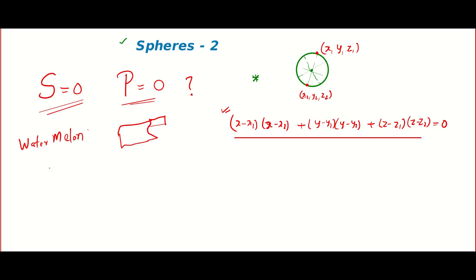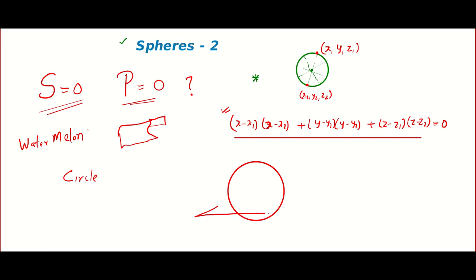Think about the cross-section — of course it will be a circle. So when we have a sphere and a plane, the cross-section formed will be a circle. One very important question they will ask is to find the center of the circle and the radius of the circle.